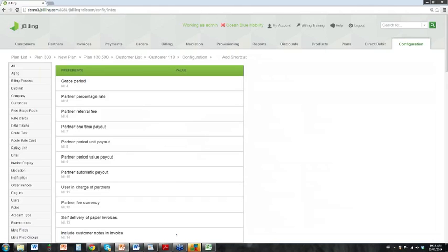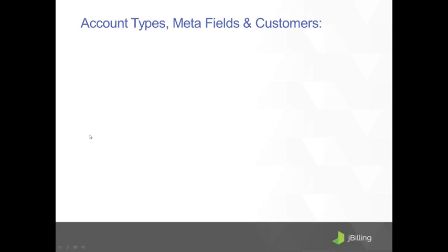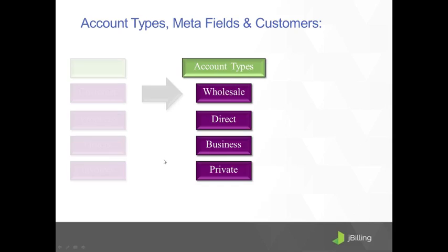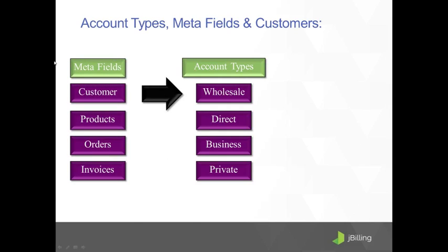We're going to head back to configuration and take a look at account types. Account types define different groups of customers. In this scenario we have wholesale and business, but this could also be different regions or different brands of customers. The system gives you the ability to group and organize your customers and then apply different fields and different products to them. You can restrict products from belonging to a particular group of account types, and we do that through meta fields.